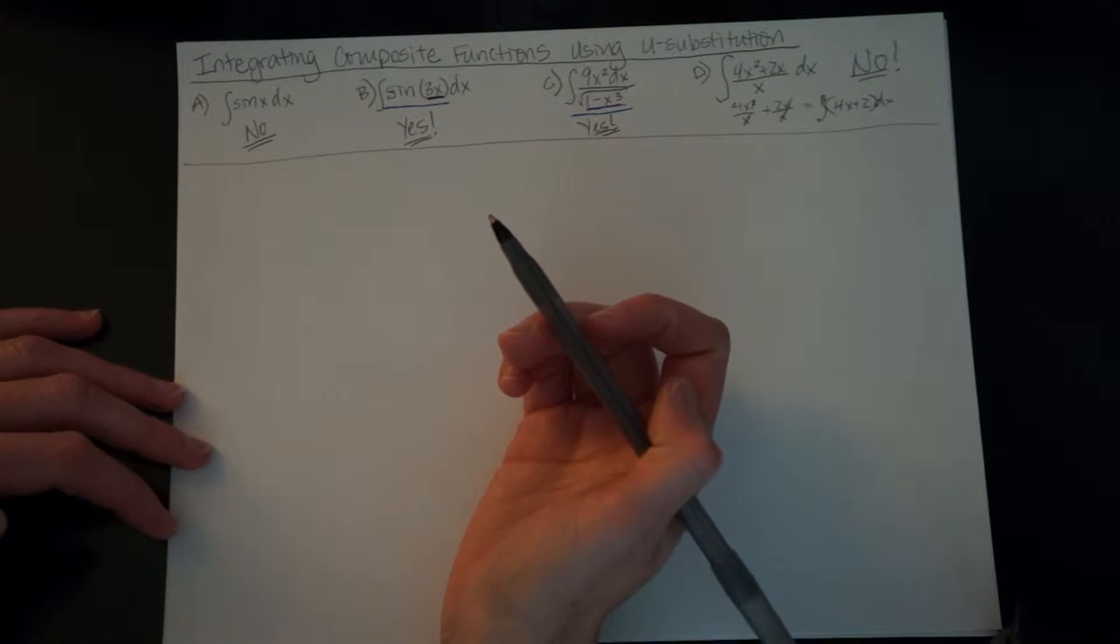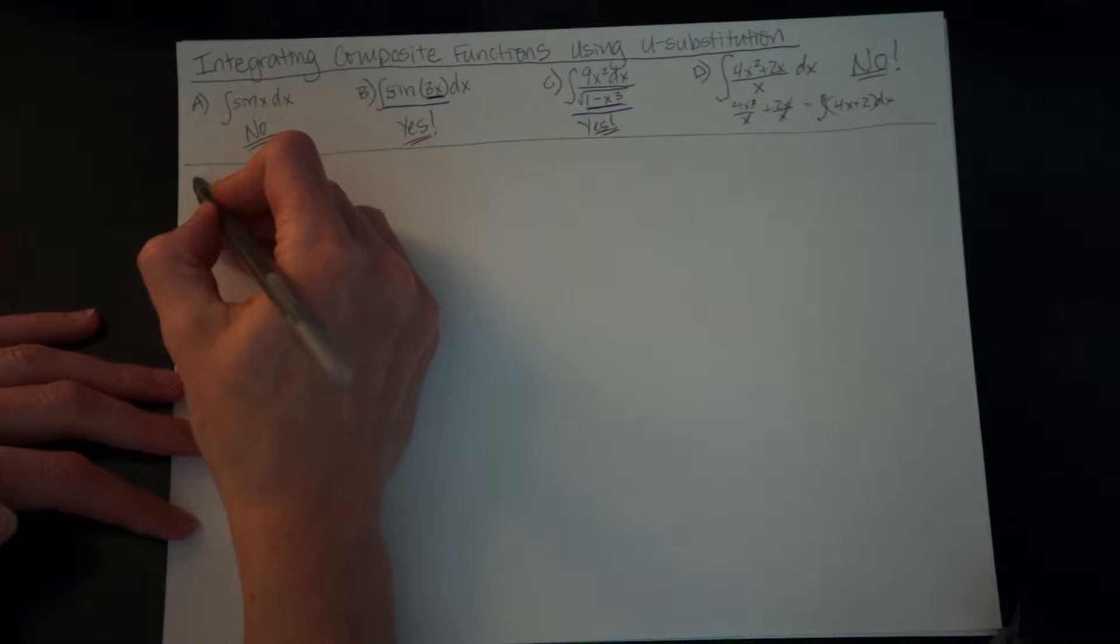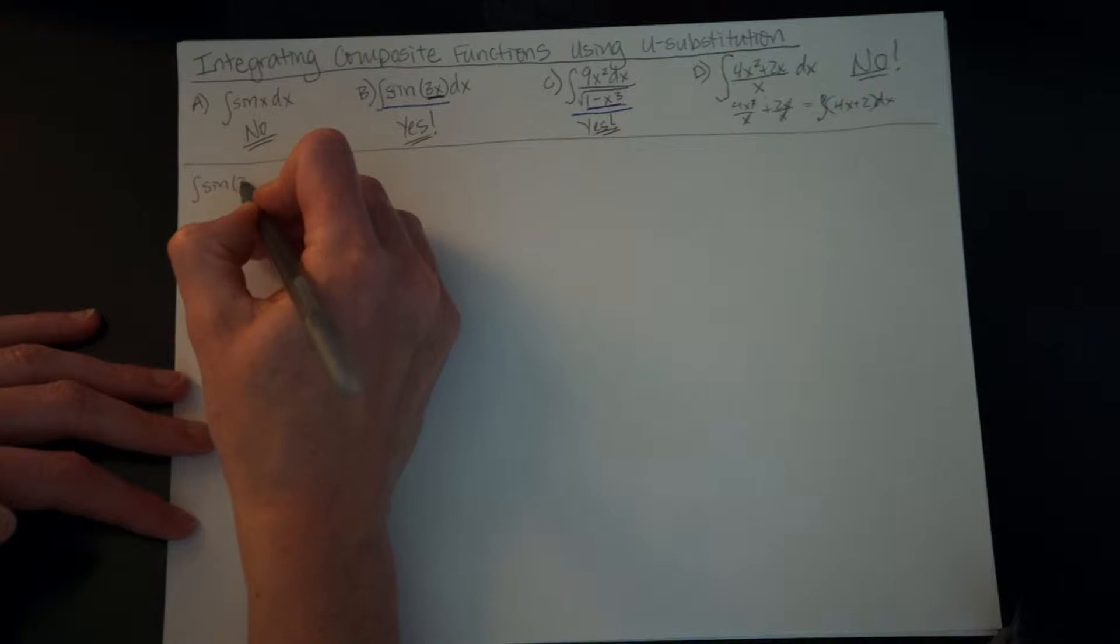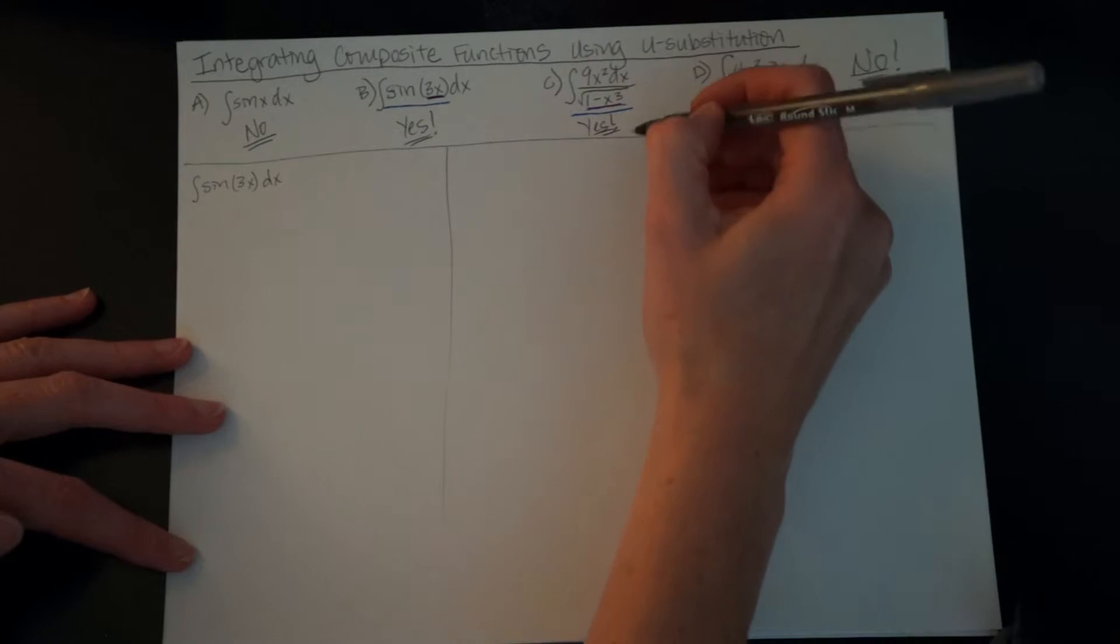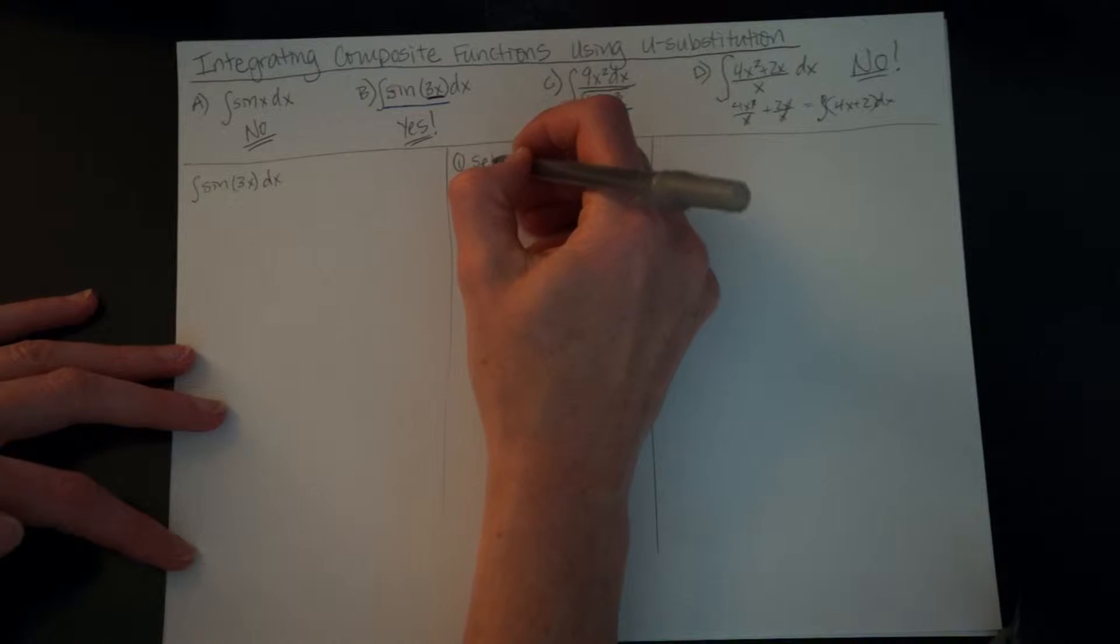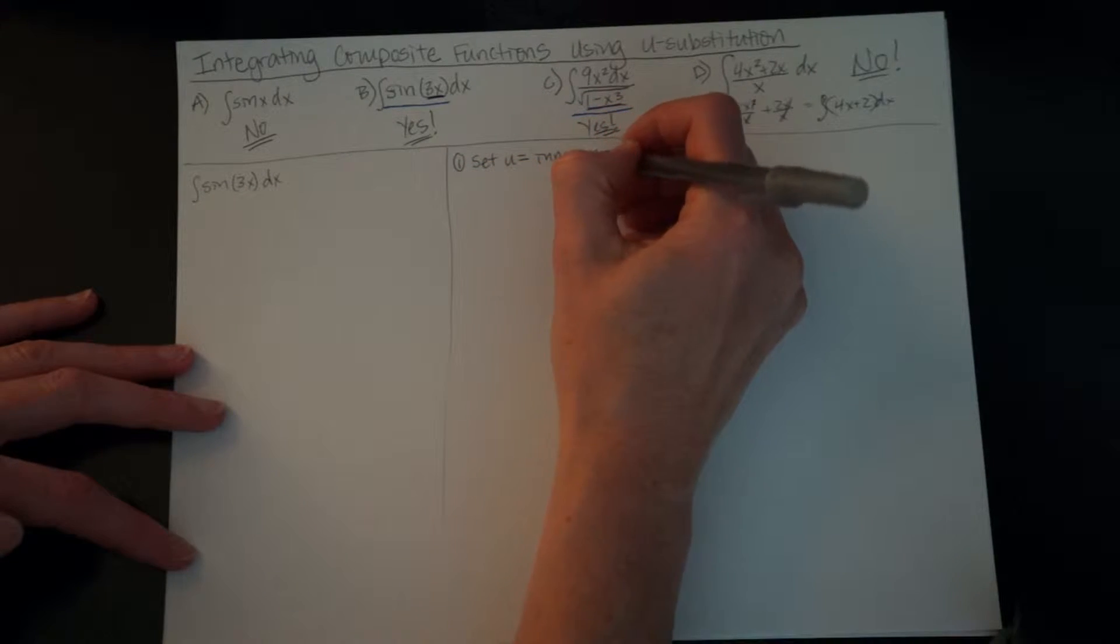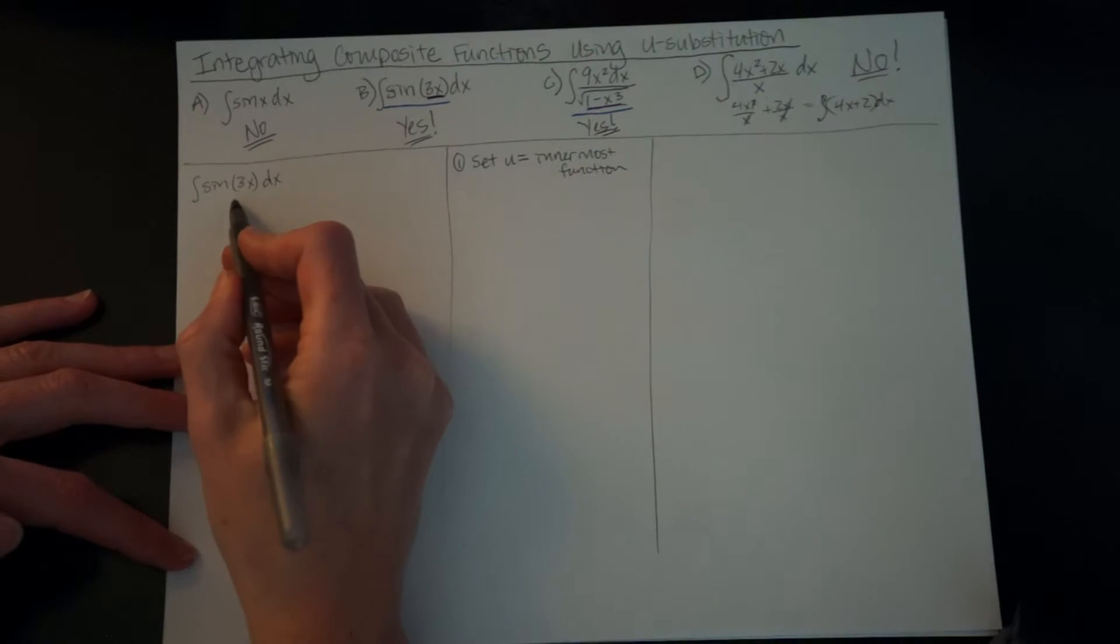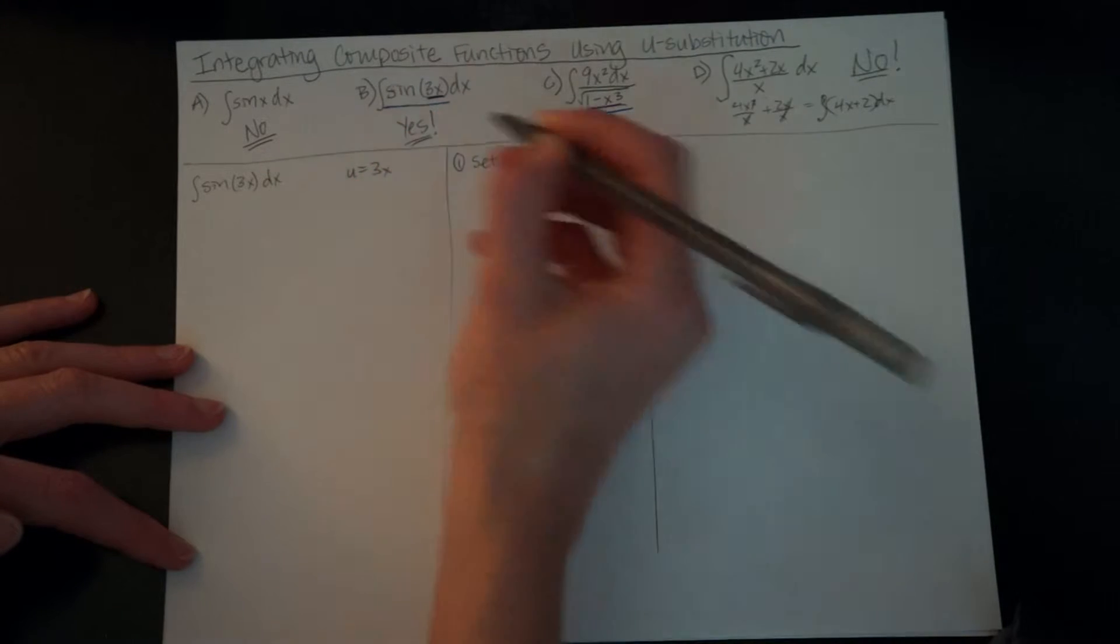So that's a little bit about recognition. So then let's take a look about how we use the u-substitution. So we'll use the integral of sine of 3x dx first. So we're going to make in the middle here, I'm going to give you some steps to follow. So step number one is set u equal to your innermost function. So the one that's within the other. So in this case, the 3x is within the sine. So we're going to say u equals 3x. Perfect.